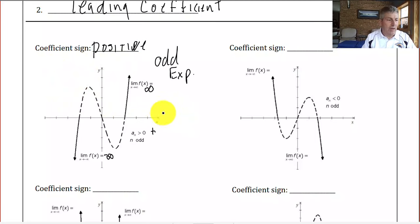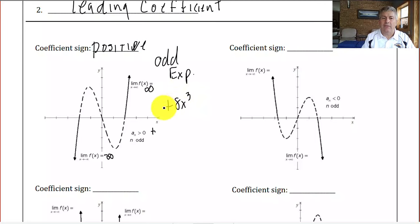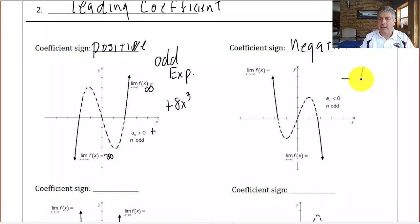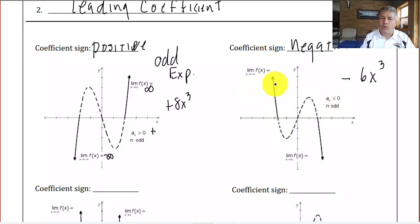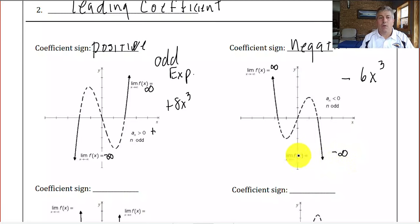On the upper left, this is something like a positive 8x cubed function. It has two turning points — it's an odd exponent with a positive leading coefficient. This other graph has a negative coefficient, something like negative 6x cubed. It's a cubic function with an odd exponent. As x approaches negative infinity, y values go to positive infinity, and as x approaches positive infinity, y values go to negative infinity. When the exponent on the leading coefficient is odd, the graph goes in opposite directions.